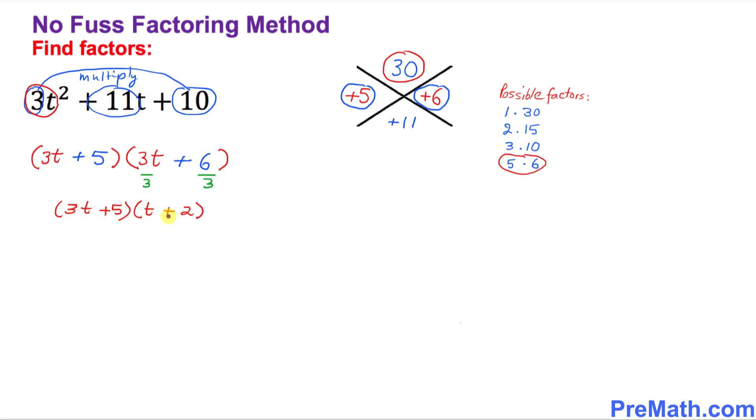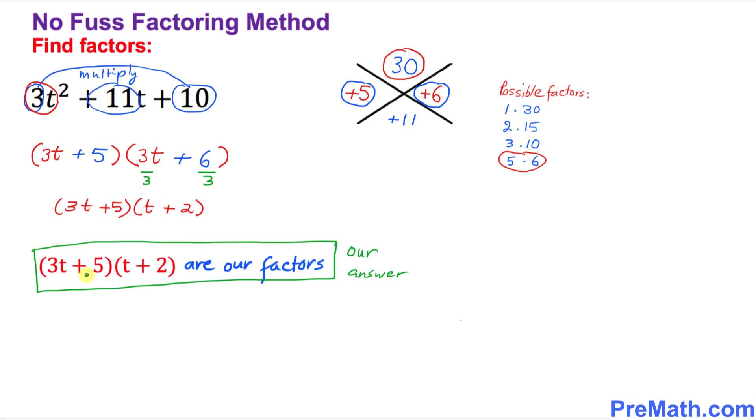So these are our factors. Thus 3t plus 5 times t plus 2 are our factors. That's our answer.